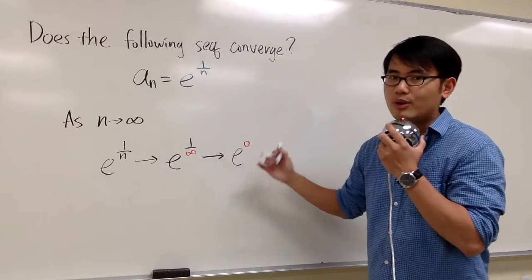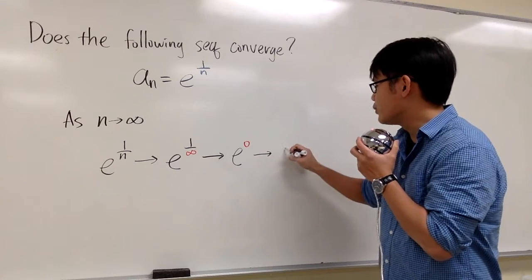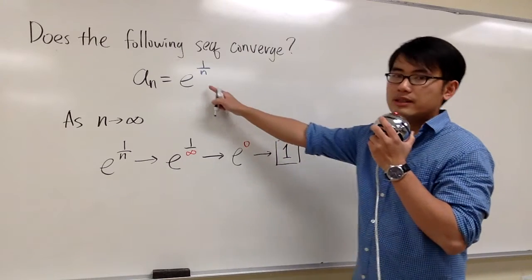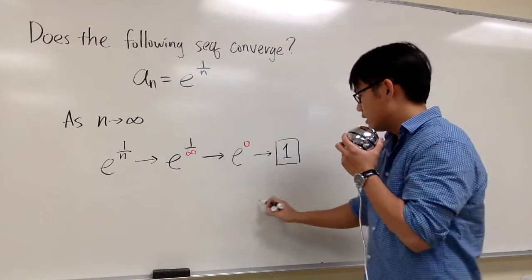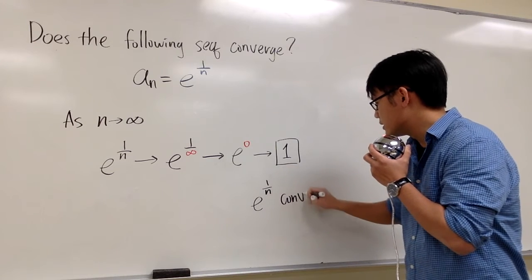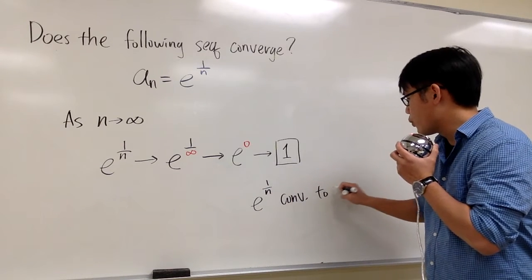And e to the 0's power, of course we know that that's equal to 1. And therefore, as you can see, this is the limit of the sequence. That means e to the 1 over n converges to 1.